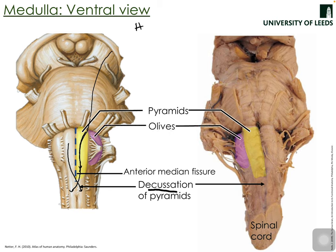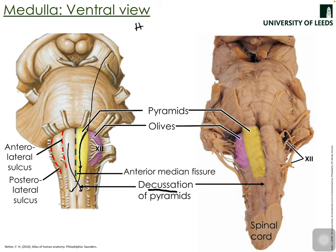Lateral to the pyramids is another bump called the olive. Between the pyramids and the olives is a groove called the anterolateral sulcus, and this marks where cranial nerve 12 — the hypoglossal nerve — emerges from the medulla. There is also a posterior lateral sulcus lateral to the olives, which marks the emergence of cranial nerves 9 (glossopharyngeal), 10 (vagus), and 11 (spinal accessory).